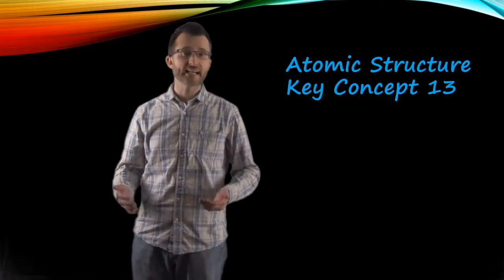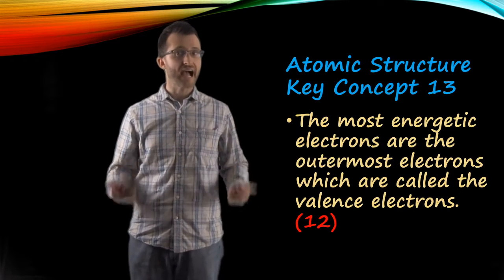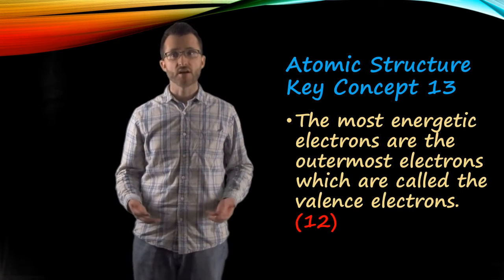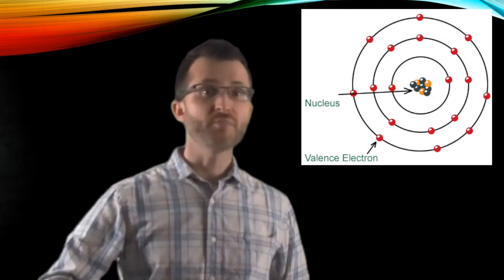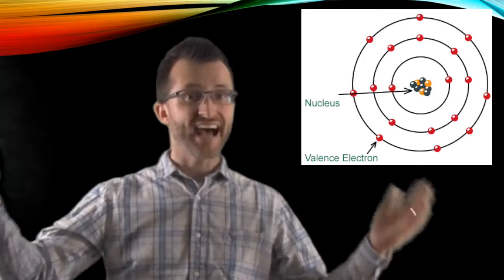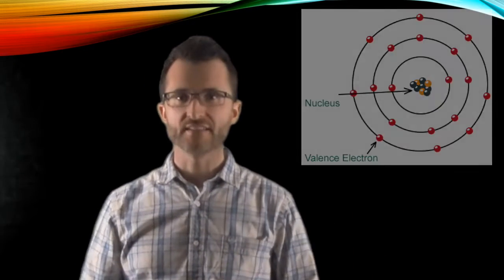Atomic structure, key concept thirteen. The most energetic electrons are the outermost electrons, which are called the valence electrons. So every energy shell as I move away from the nucleus gets higher in energy. As I get to my last shell, those have the highest energy and we have to remember that those are called the valence electrons.